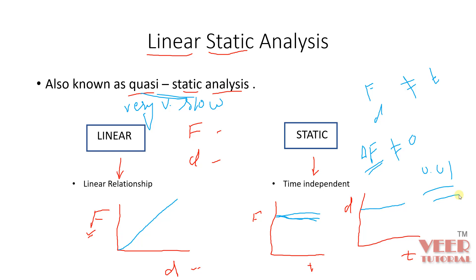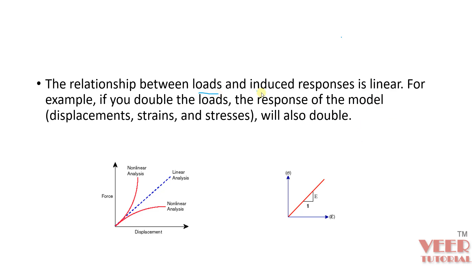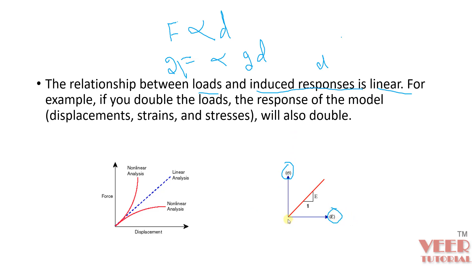The relationship between load and the induced response — the displacement — is linear. For example, F is proportional to D: if I double the value of force, I will get double the displacement. Looking at a stress-strain graph, we consider it as a straight line up to the proportionality limit. Whenever this line is not straight — meaning it is curved — that type of analysis is called nonlinear, which is a more complicated type of analysis covered later in the course.